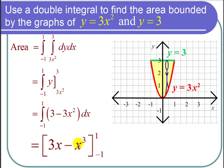3 times 1 is 3 minus 1 cubed is 1 and 3 minus 1 is 2. And if I plug in negative 1, I get negative 3 minus negative 1 is negative 2. And 2 minus negative 2 is 4. And that's the area of the region bounded by these two curves.